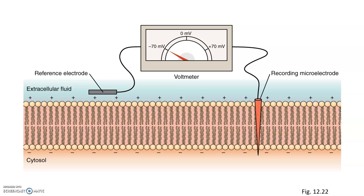It turns out that the resting membrane potential in neurons is about negative 70 millivolts. When I say resting, this means that the neuron is not sending any information and is in its natural state. It turns out that all the cells in your body have a resting membrane potential, and it can vary based on the composition of the intracellular and extracellular fluid.